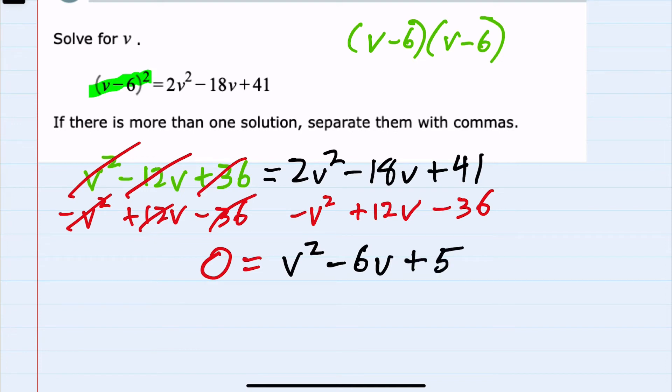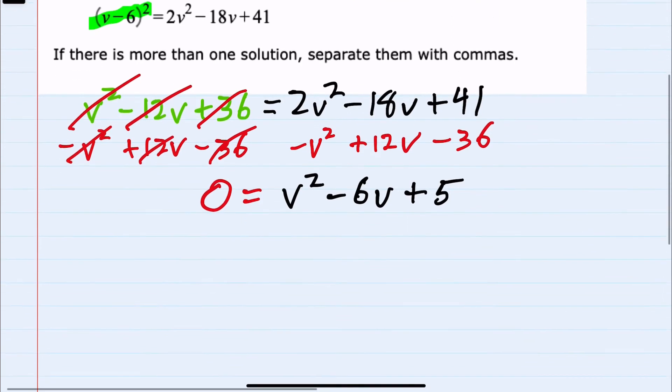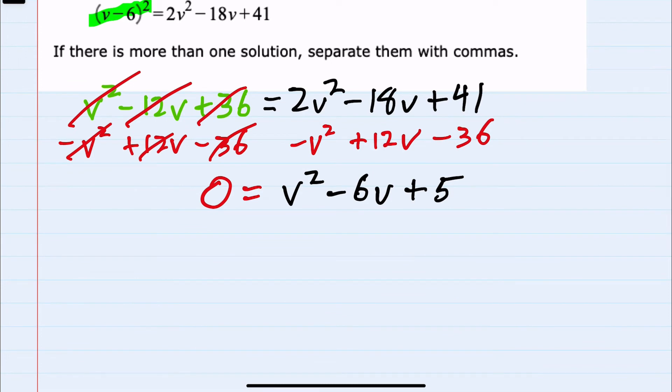So things are looking much better now. Our next step is going to be to factor the expression on the right. So again, factoring on the right, since the leading coefficient is 1, the v² would factor as v and v.